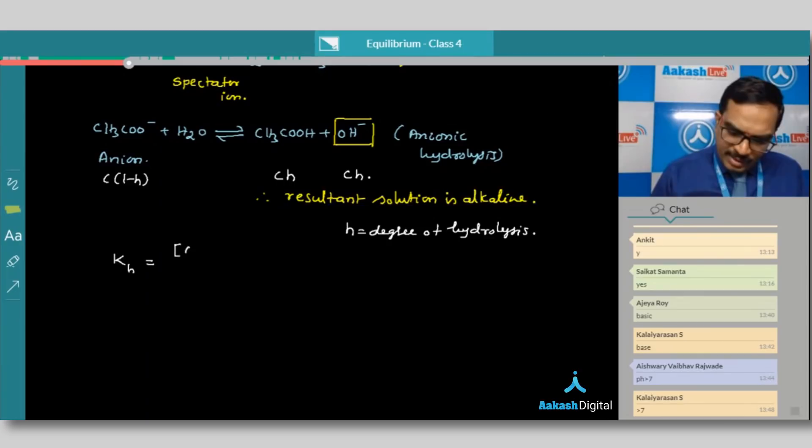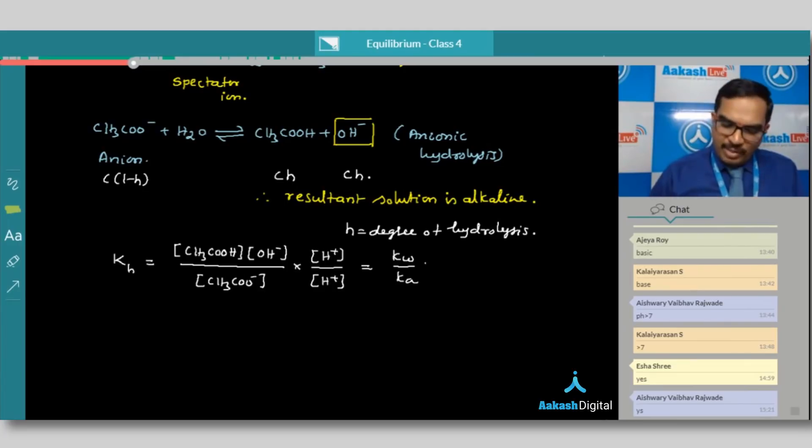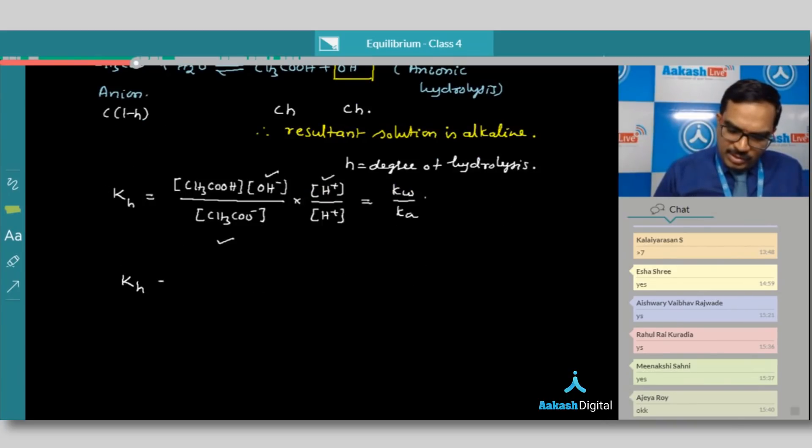Hydrolysis constant. The same, we can write it as CH3COOH into OH- ion concentration upon acetate ion concentration. Can I multiply and divide with H+ ions concentration? There is no change in the value. The same I can write it as Kw divided by Ka. Because here we have H+ and OH- product. This will give Kw. Rest we can have Kw by Ka. And in this expression, if we substitute the values, that is Kh is equal to, what is acetic acid concentration here? Is it Ch? What about OH- here? Also Ch only. What about acetate ion concentration? C into 1 minus h.